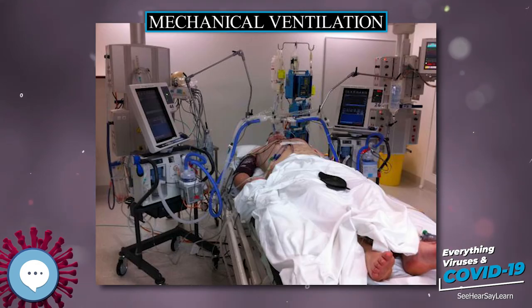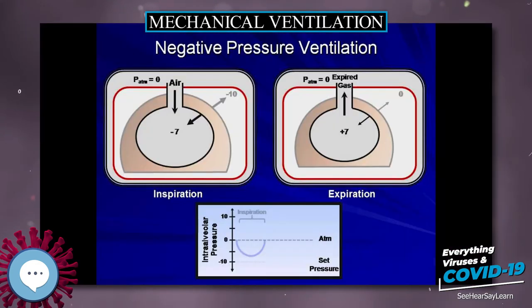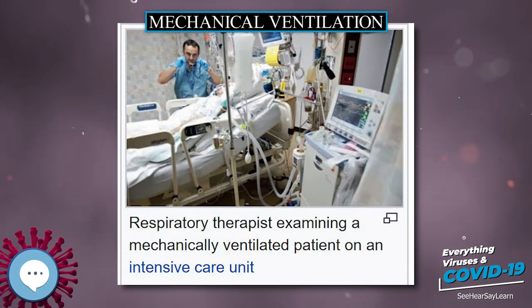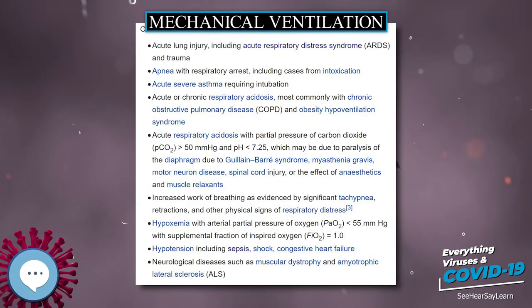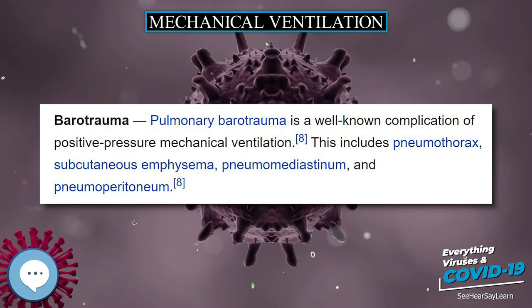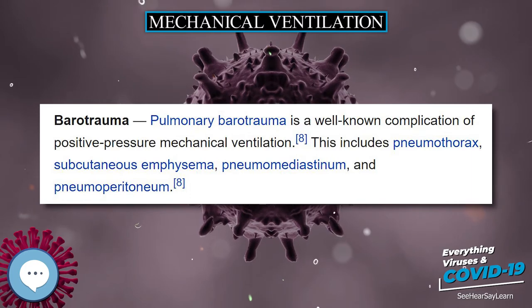The two main types of mechanical ventilation include positive pressure ventilation, where air or another gas mix is pushed into the lungs through the airways, and negative pressure ventilation, where air is, in essence, sucked into the lungs by stimulating movement of the chest. Apart from these two main types, there are many specific modes of mechanical ventilation, and their nomenclature has been revised over the decades as the technology has continually developed.